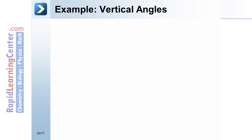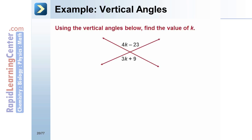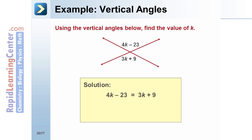Example: Vertical Angles. Using the vertical angles below, find the value of K. Solution: By definition, vertical angles are congruent. Therefore, set the expressions equal to each other: 4K minus 23 equals 3K plus 9. Subtract 3K from both sides to get K minus 23 equals 9. Simplify by adding 23 to both sides. K equals 32.